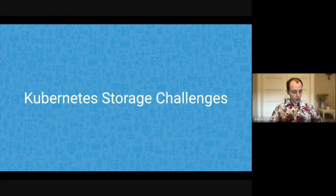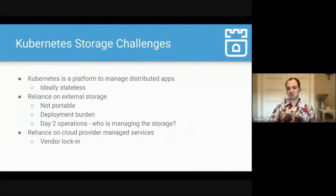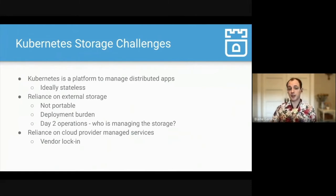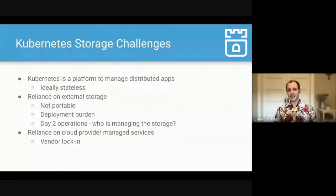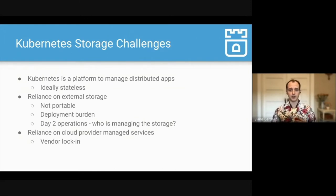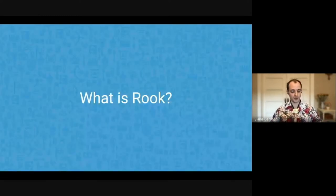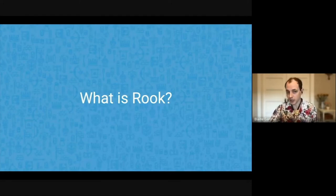Starting with background — what are the challenges that Rook hopes to solve? In Kubernetes, we have a platform used to manage distributed applications. These are ideally stateless, but in practice this is pretty rare. Something requires storage somewhere. If we rely on external storage, this is not portable. Often deployment can be a burden, and for day two operations we need someone to manage it. It may make sense to go to a cloud provider managed service, but then we may be faced with vendor lock-in.